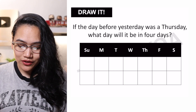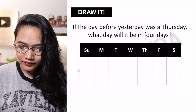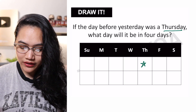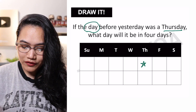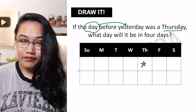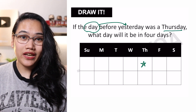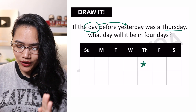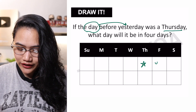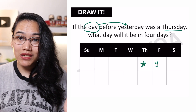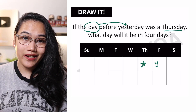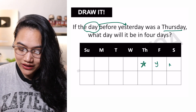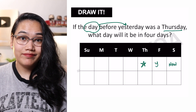Kung ang day before yesterday was a Thursday, lalagay lang natin sya dito — ito yung ating reference point. That was the day before yesterday. Ano ba yung day before yesterday? Yun yung araw bago yung kahapon. So kung ito yung day before yesterday, Friday would be yesterday. And ang ibig sabihin nun, kung yesterday ay Friday, ang today ay magiging Saturday. Ito na yung magiging now natin — Saturday.